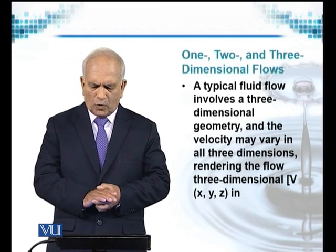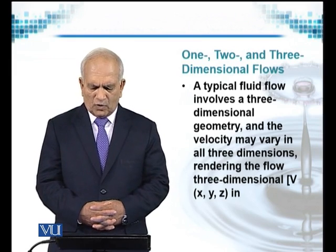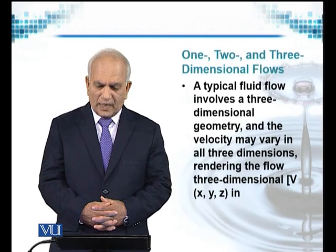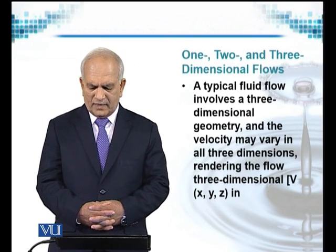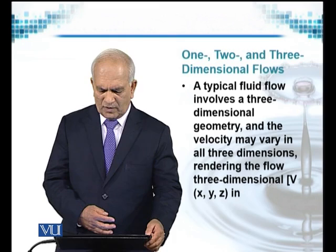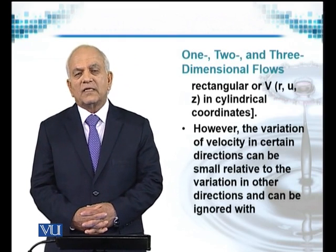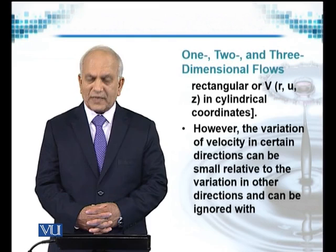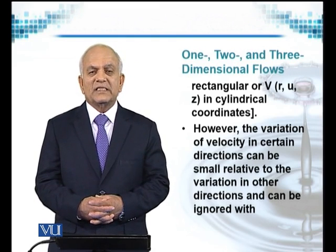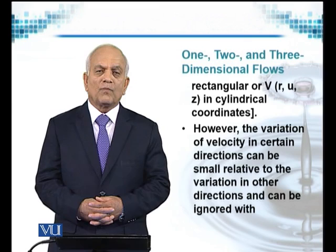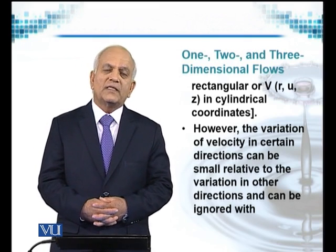So velocity is the main player in a fluid flow, the velocity vector. And it has three components, x, y, z, as you know. So a typical fluid flow involves a three dimensional geometry and the velocity may vary in all three dimensions, rendering the flow three dimensional. The velocity vector will have its component in x, y and z direction if we are considering rectangular coordinates or if we are considering cylindrical coordinates. Let's say the fluid is flowing in a pipe, for example, then the geometry is cylindrical, then it's better, more convenient and easier to solve the fluid flow situation in a cylindrical polar coordinates.